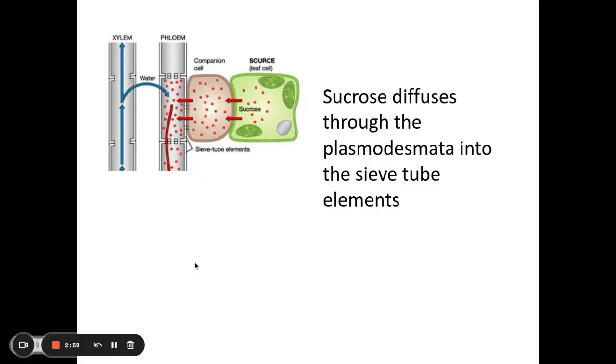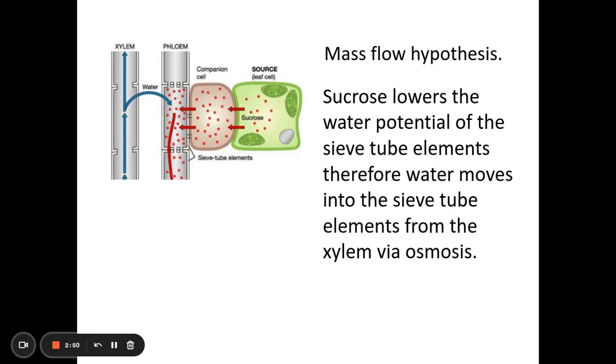So the sucrose will then diffuse from the companion cells into the sieve tube elements through the plasmodesmata. And once the sucrose is now in the sieve tube element, we can now move on to the mass flow hypothesis.